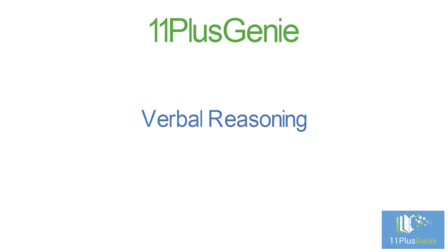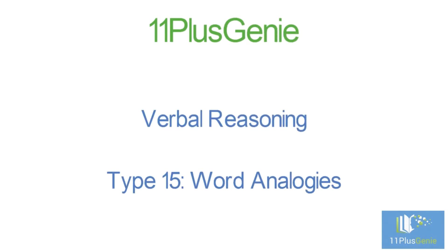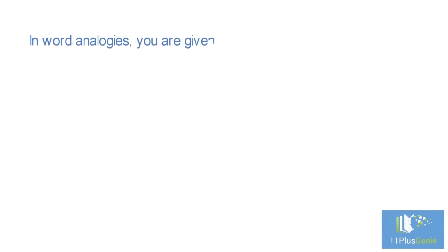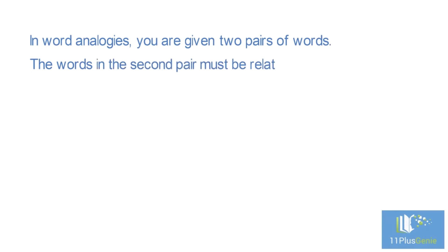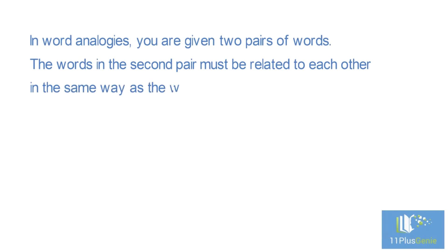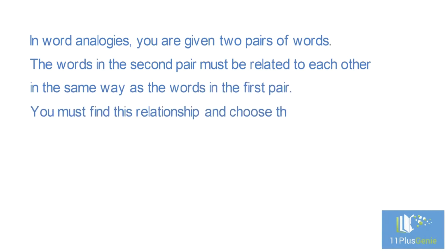Verbal Reasoning Type 15: Word Analogies. In Word Analogies, you are given two pairs of words. The words in the second pair must be related to each other in the same way as the words in the first pair. You must find this relationship and choose the correct word or words to complete the analogy.